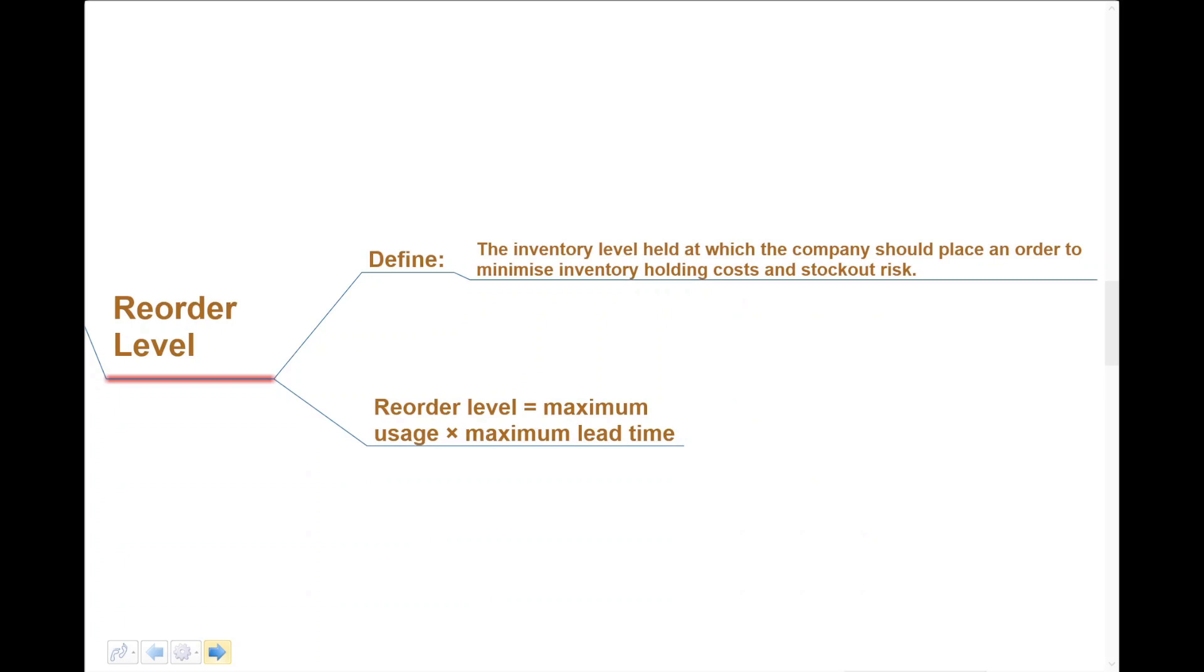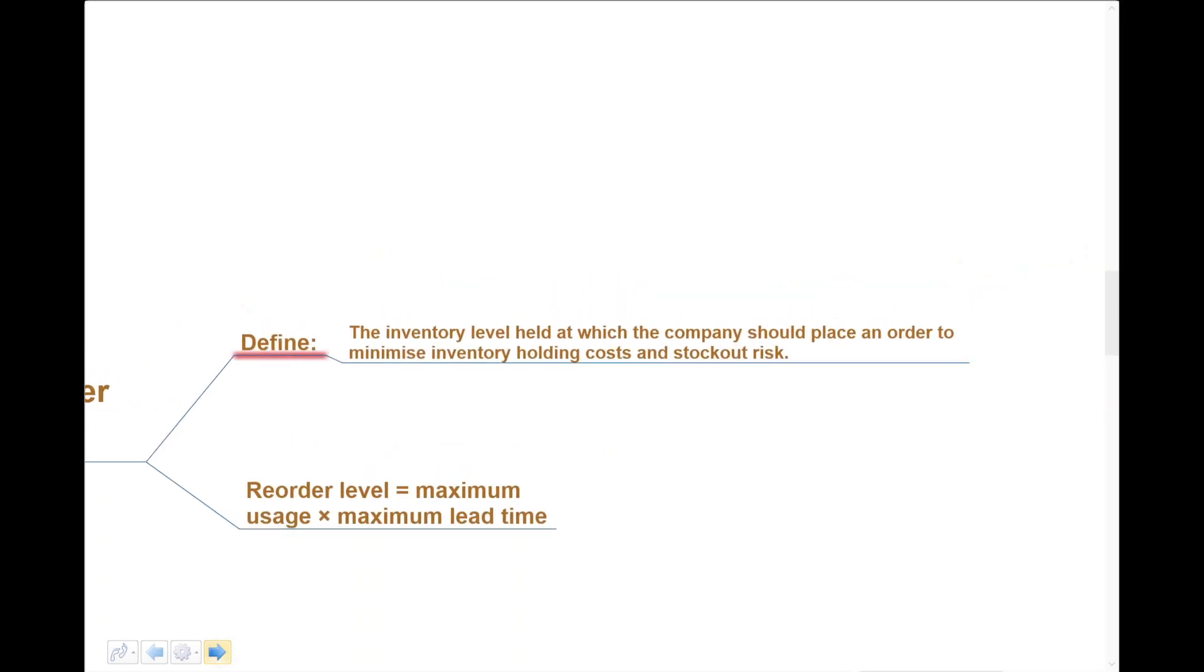Moving on from there, this formula now—watch for this because this formula, as you'll see just bottom part of the branch there, is not in the tables. What is it? It's a reorder level. What do we mean by that? The inventory level held at which the company should place an order to minimize inventory holding costs and stock-out risk. You'll see the formula here. The way to learn formulas, for me, is not to memorize them necessarily but to use them. So the reorder level is basically the maximum usage times the maximum lead time. That's the reorder level. We get to that level, we need to reorder. Let's put these formulas into practice—that's the way to get them down.